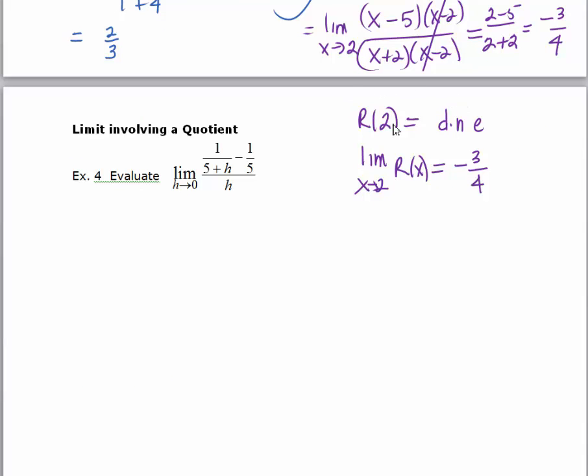What I know is that r of 2 does not exist, but the limit of r of x as x approaches 2 is equal to negative 3 fourths. We also know that the common factor, x minus 2, is actually a way to find out where the hole exists. When there is a common factor, you will have a hole in your graph and you can find out where that hole exists by setting your common factor equal to 0 and solving. So we know that a hole exists at x equals 2.